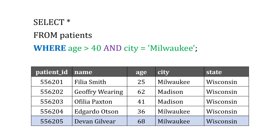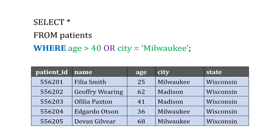We could also bring these two things together and say only give me patients where they're over 40 and they're in Milwaukee. Those two conditions have to be met at the same time when we use the AND operator. Now if we flip this and use OR instead of AND, the patients have to have at least one of those conditions met. And it looks like all of them are either over 40 or in Milwaukee — they meet at least one of those two conditions.